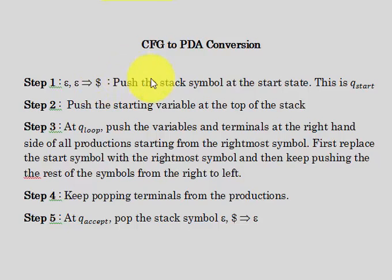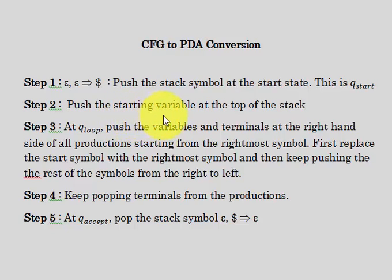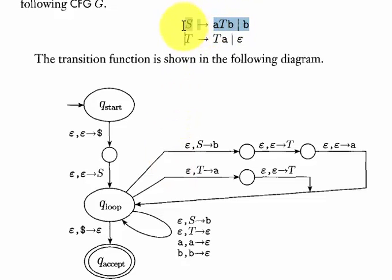In step one, you push the stack symbol at the start state and make the q_start state. Now after q_start, we're not immediately going to the q_loop state. There are fundamentally three compulsory states, but in the middle there are some additional states. After q_start, the next state is where we insert the starting variable. For every context-free grammar like this, there is a start symbol S.